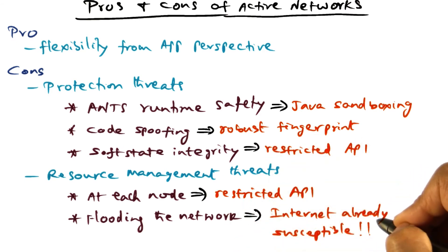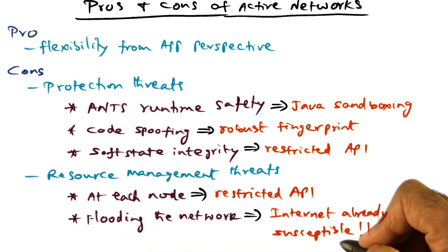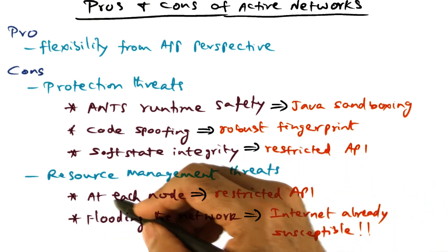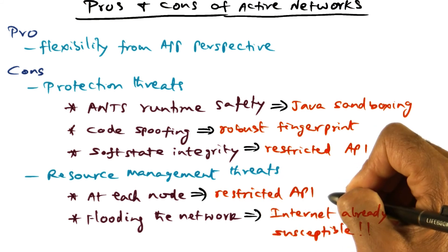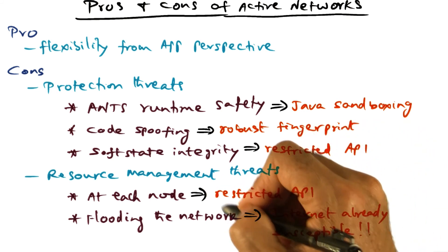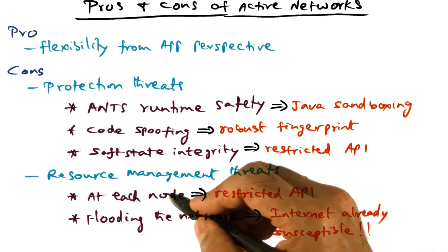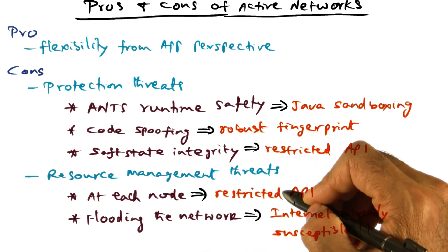Well, it is. But internet is already susceptible to this kind of resource management threat. And yes, capsule adds to it, but it is not anything new that it is adding in terms of resource management threat. On the other hand, we can ask the question, at each node, is it going to consume more resources than it should? And this again comes back to the safeguard that they have in the ANTS toolkit, that the API is a restricted API, and therefore, the amount of resources that you can consume at a node is fairly restricted.